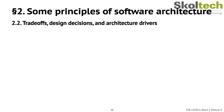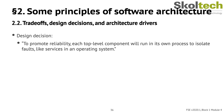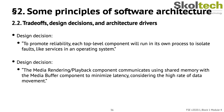With an established prioritization of quality attributes, one may proceed with making other design decisions. For example, to promote reliability, each top-level component will run in its own process to isolate faults, like services in an operating system. Or, the media rendering/playback component communicates using shared memory with the media buffer to minimize latency, considering the high rate of data movement. Since these design solutions take considerable time to discuss and are hard to infer from reading source code, you might want to include them in documentation for new developers.